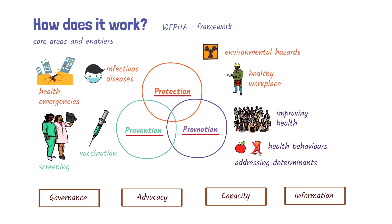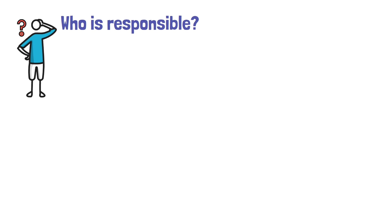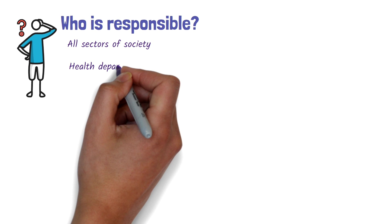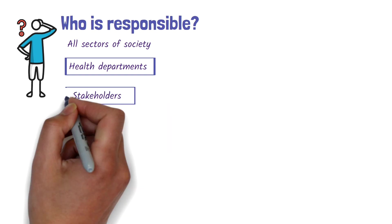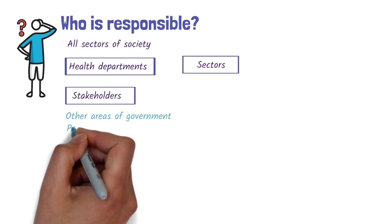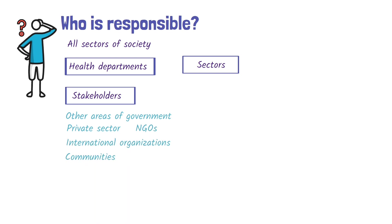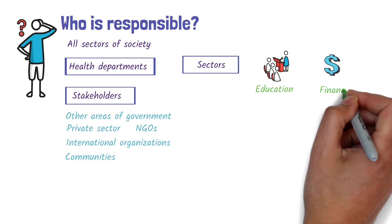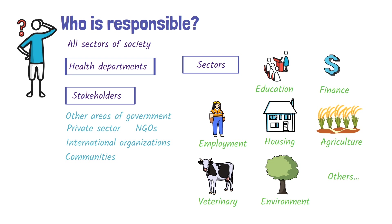So, who is responsible for public health? Ultimately, the responsibility of creating a healthy population lies with all sectors of society. While health departments have a central role in public health, improving the health of a population requires coordinated efforts from a wide range of stakeholders and sectors. They include other areas of government, the private sector, non-governmental organizations, international organizations, and local communities, across various sectors such as education, finance, employment, housing, agriculture, veterinary, environment, and others — all united with a shared goal of improving the health of the public.